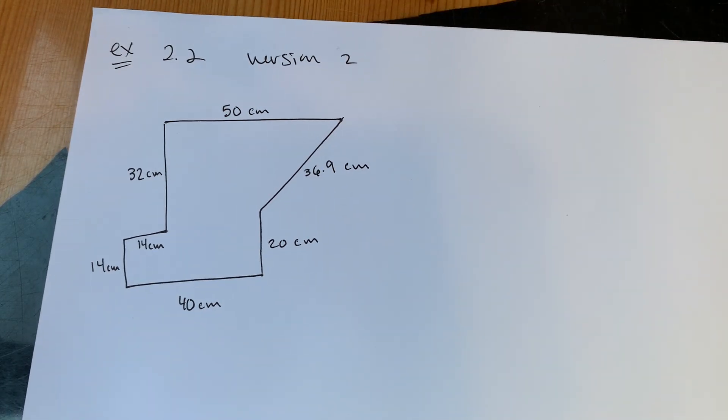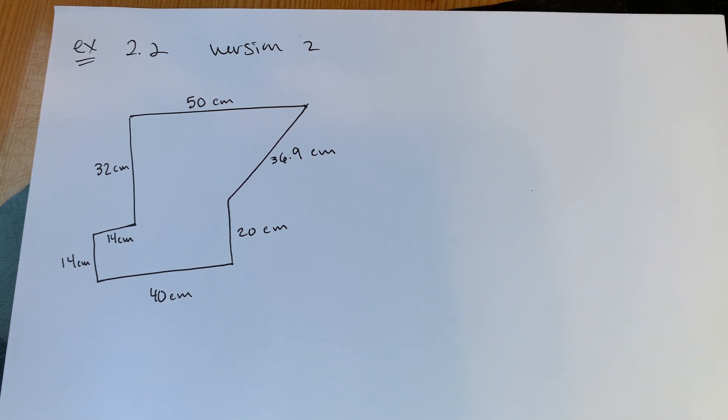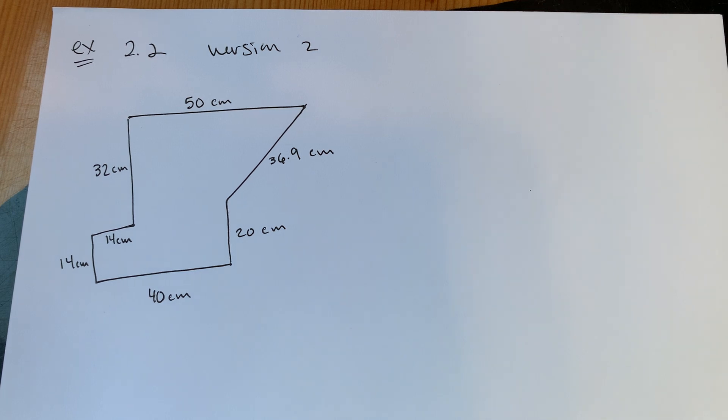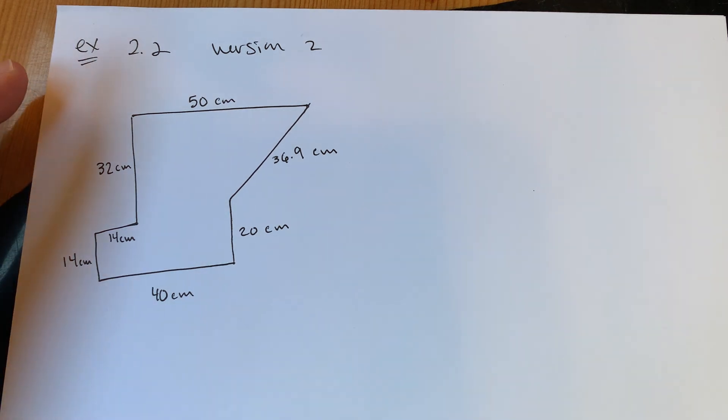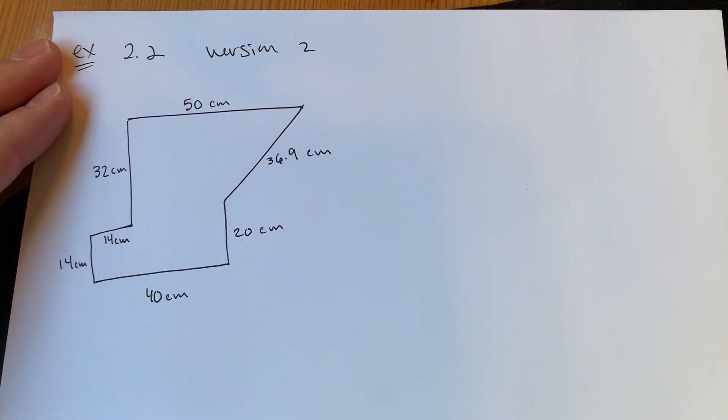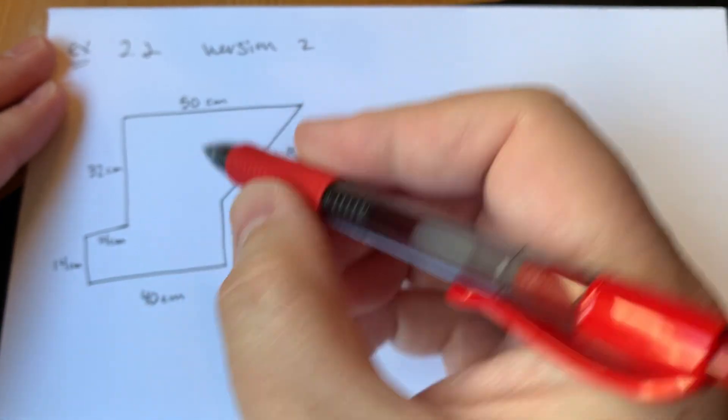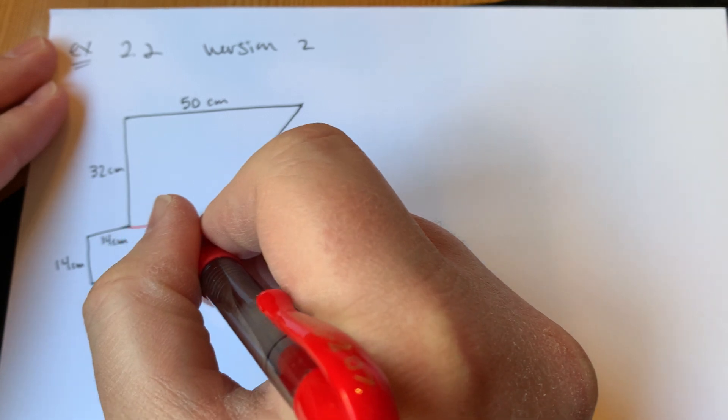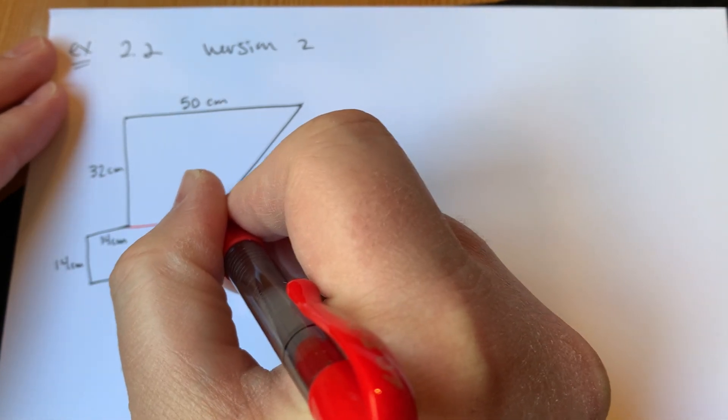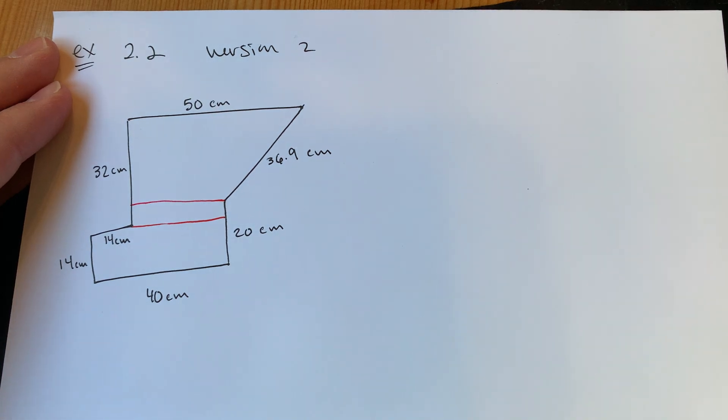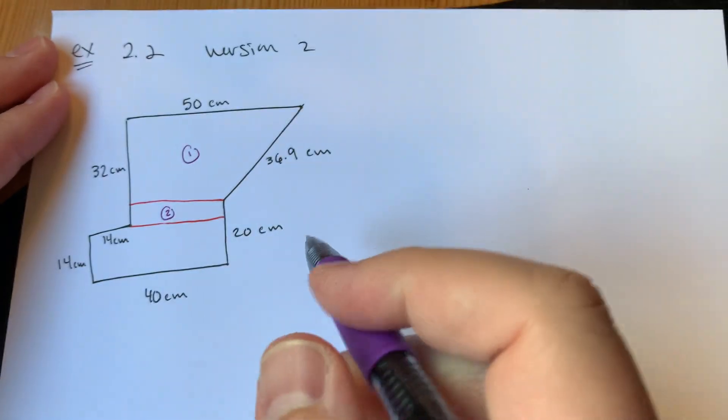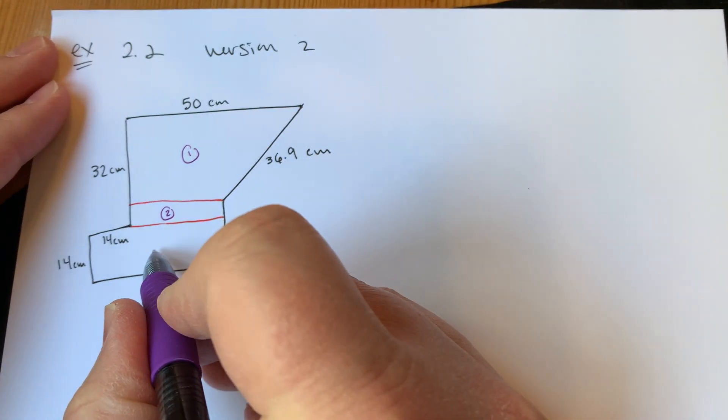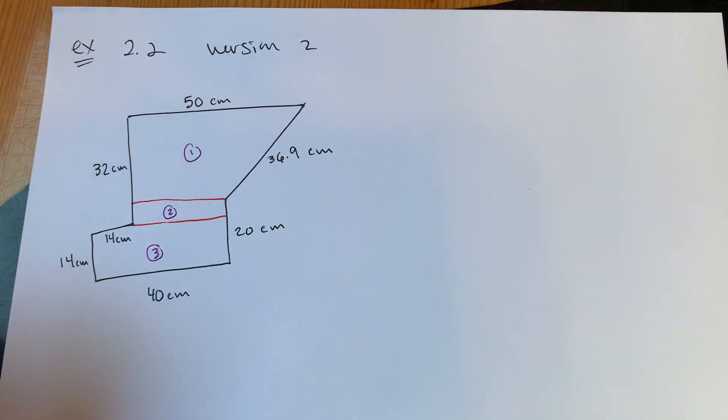Now, what would be more fun would be taking the exact same problem and then doing it again. That sounds like fun. One thing about these compound figures is, for the most part, there's more than one way to look at them and break them down and take them apart. The one that we just did, we did vertical lines here and here. What I'm going to propose is instead, how about two horizontal lines?